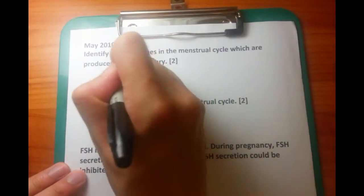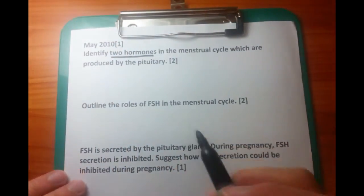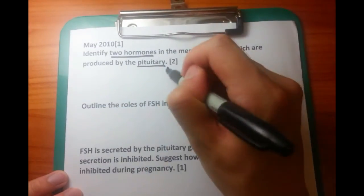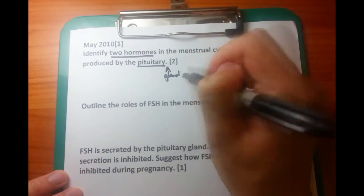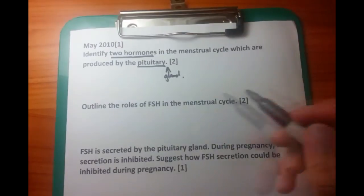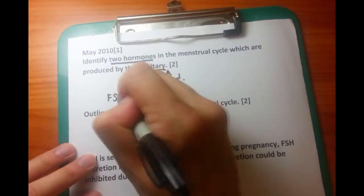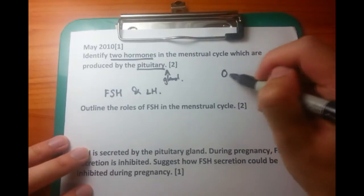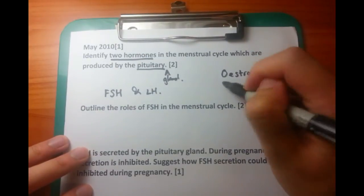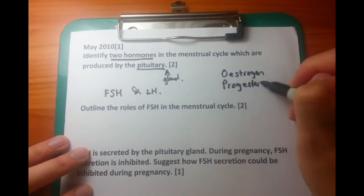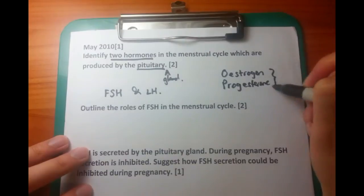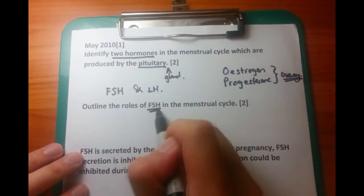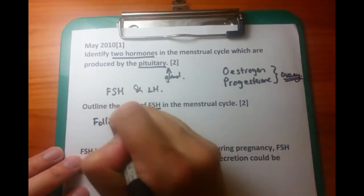Let's look at these questions. Firstly, identify two hormones in the menstrual cycle which are produced by the pituitary gland. The pituitary gland is found in the brain and releases hormones involved with various different functions, one of them being sexual reproduction. The easy way to remember these two hormones are the ones which have letters — FSH and LH. FSH being follicle stimulating hormone, LH being luteinizing hormone.